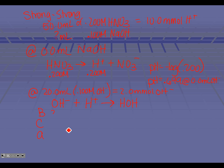We're starting with 2 millimoles of hydroxide and 10 millimoles of hydrogen — we don't even care about the water. Just like in our last unit with buffers, the change is exactly the same: we always change by the smallest millimoles. Our hydroxide is smaller, so we do minus 2 and minus 2. That uses up all of our hydroxide and leaves us with 8 millimoles of our acid.